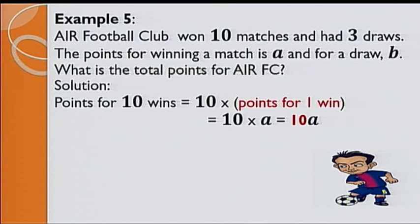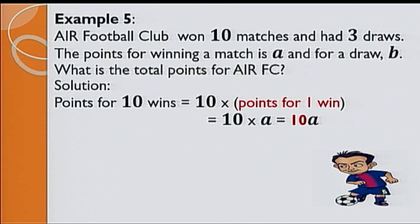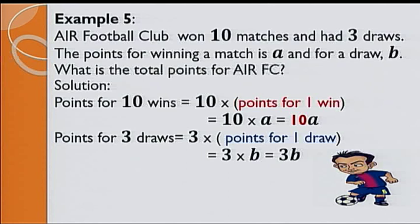Points for 3 draws is equal to 3 multiplied by points for 1 draw. That is, 3 multiplied by b, which is 3b. The total points for Air FC will be 10a plus 3b. Here is an exercise for you to practice.